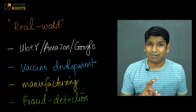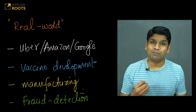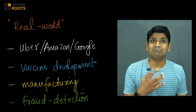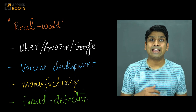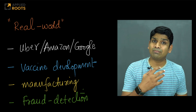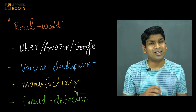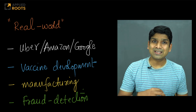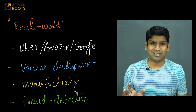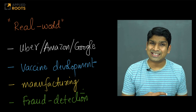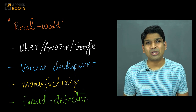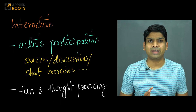When I say real-world and applied, we will take problems from companies like Uber, Amazon, Netflix, and Google. We will also take real-world examples from COVID vaccine development, design of new drugs and medicines in healthcare, quality control examples from the manufacturing sector, fraud detection in financial systems using simple statistical testing techniques, and also how fraud in scientific research can be caught using these same statistical techniques.